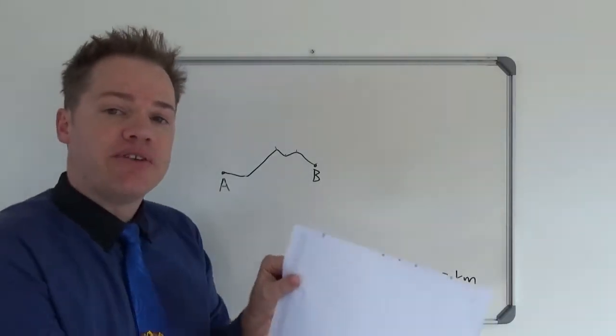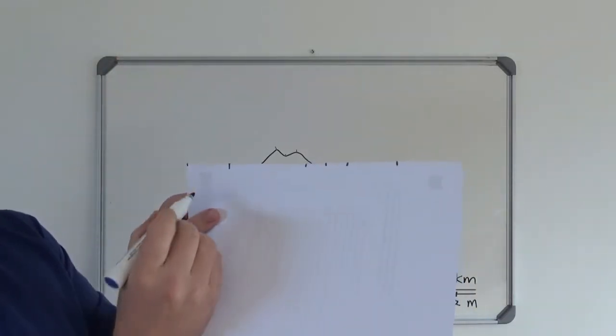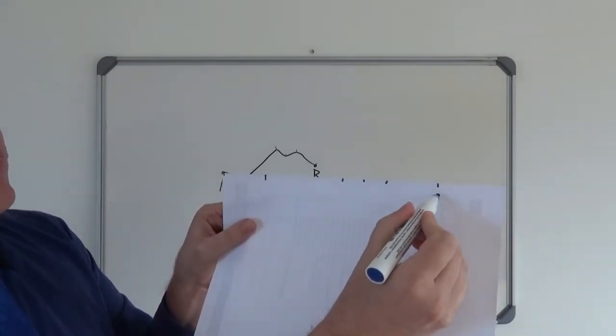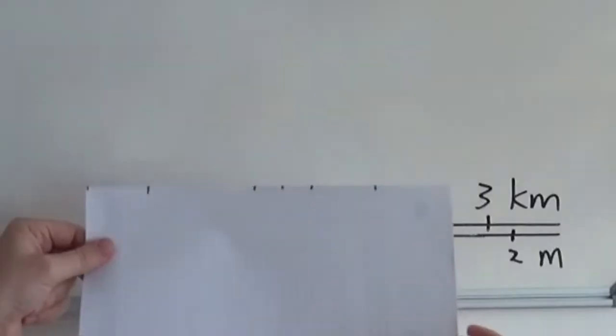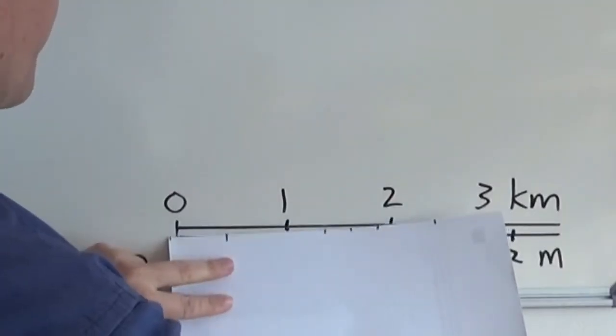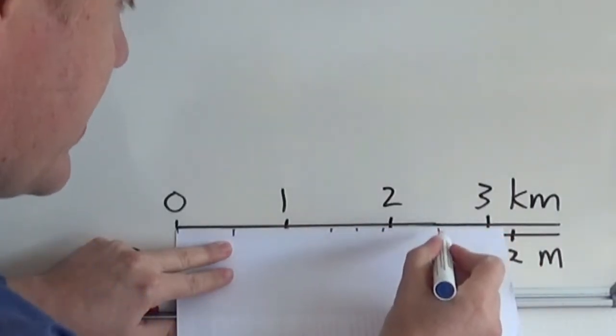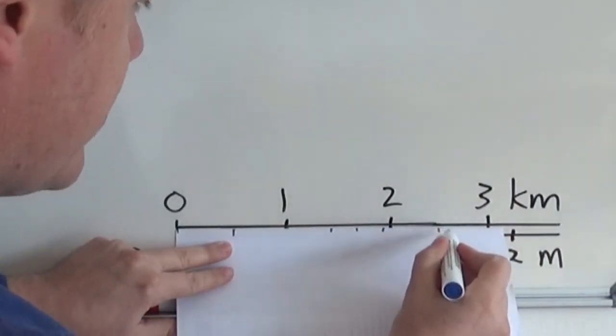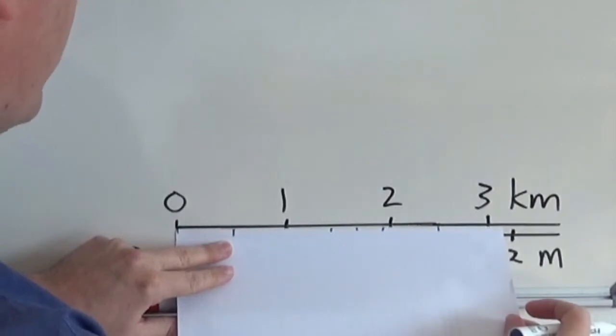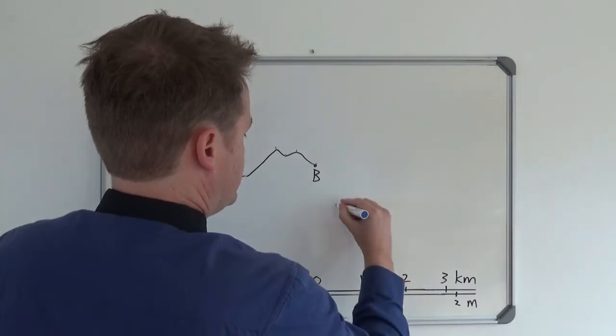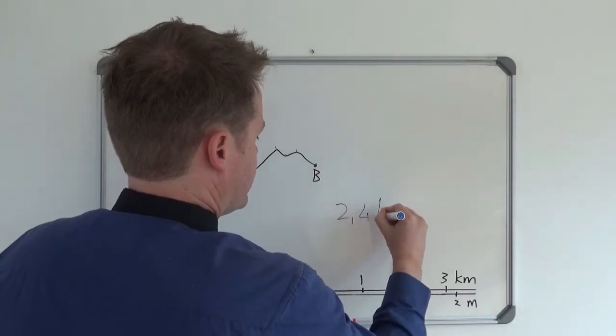Right, so what you have now is a straight line. We have point A over here, point B is where we finished, and then we simply hold it on the line scale and now we can read the distance. As you can see I wouldn't say it's two and a half, it's nearly two and a half, let's say it's 2.4 kilometers. So your answer is 2.4 kilometers.